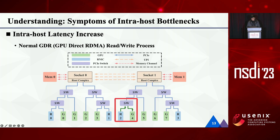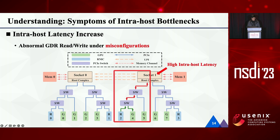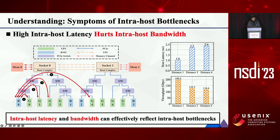The second symptom is intra-host latency increase. This figure shows a normal process of GDR, that means GPU Direct RDMA between RNIC2 and GPU4. You can see that RNIC2 can directly communicate with GPU4 under a PCIe switch. However, misconfigurations such as disabling ATS or enabling ACS may redirect all GDR traffic to the CPU root port, leading to increased PCIe latency. The increased intra-host latency may also degrade intra-host bandwidth. We evaluated the impact of PCIe latency on GDR bandwidth.